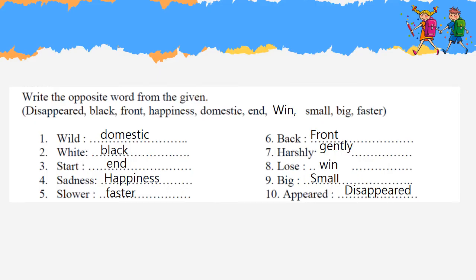First one: wild — domestic. White — black. Start — end. Sadness — happiness. Slower — faster. Back — front. Harshly — gently. Loose — win. Big — small. Appear — disappear. Okay.